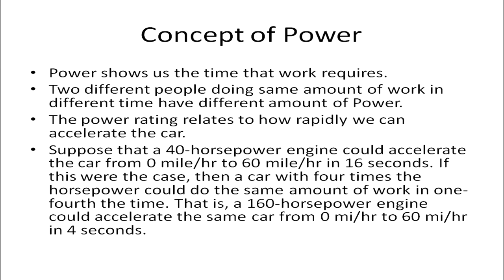Power shows us the time that work requires. If two different people do the same amount of work in different times, they have different amounts of power. For example, a 40 horsepower engine could accelerate a car from 0 to 60 miles per hour in 16 seconds. A car with 4 times the horsepower could do the same amount of work in one-fourth of the time — a 160 horsepower engine could accelerate the same car from 0 to 60 miles per hour in 4 seconds.